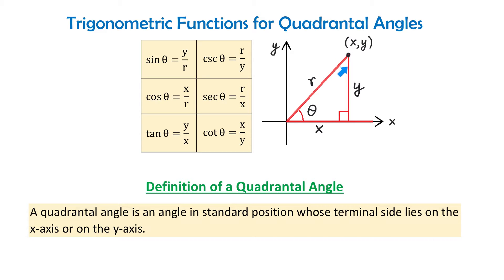If from this point we draw a perpendicular down to the x-axis, then we form a right triangle with the sides x, y, and the hypotenuse r. Then sin(θ) = y/r, cosine(θ) = x/r, and tangent(θ) = y/x. Also, cosecant(θ) is the reciprocal of sine and equals r/y. Secant(θ) is the reciprocal of cosine and equals r/x, and cotangent(θ) is the reciprocal of tangent and equals x/y.